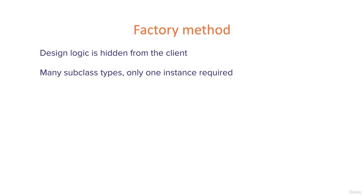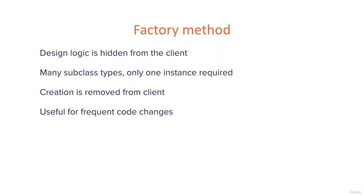Multiple classes of objects can be created and the client will have access without knowing which exact type it is actually using. We have many subclass types but only one instance. We can have multiple types of objects, but as long as the utilization or interface is the same, we only need one instance and don't care which type it is. Creation is removed from the client — we need another class that creates objects. This is useful for frequent code changes, because the separation allows us to add or subtract multiple types and the code will still work seamlessly.